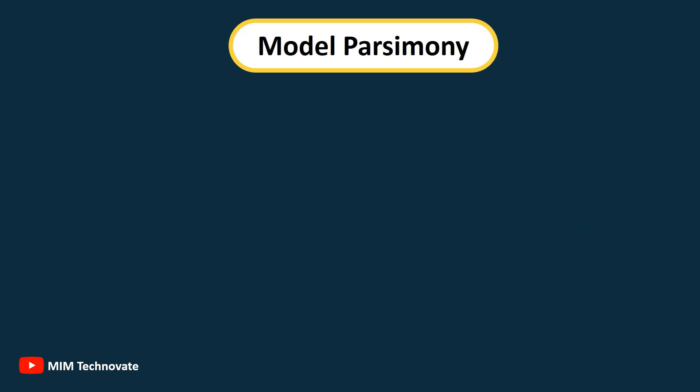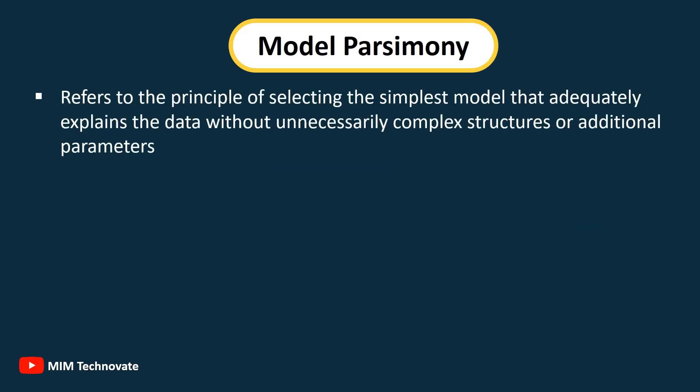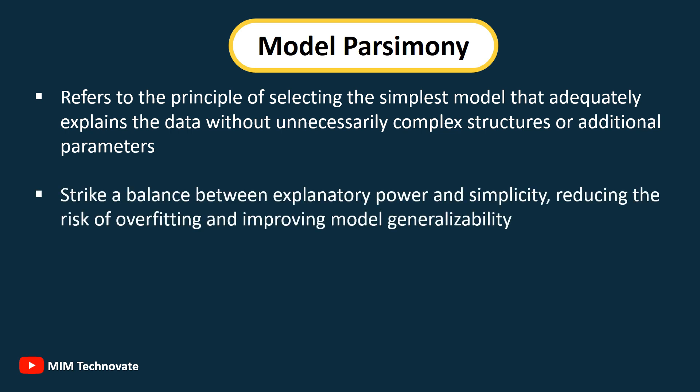Model Parsimony: Refers to the principle of selecting the simplest model that adequately explains the data without unnecessarily complex structures or additional parameters. Parsimonious models strike a balance between explanatory power and simplicity, reducing the risk of overfitting and improving model generalizability.